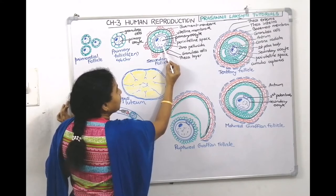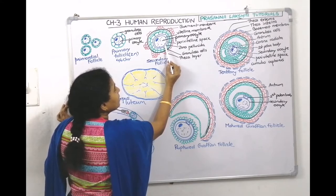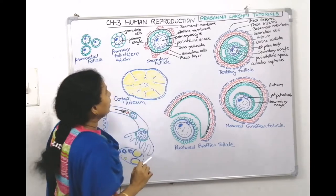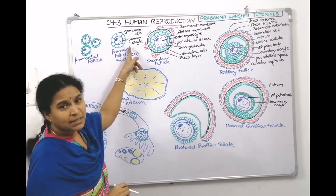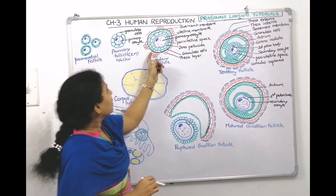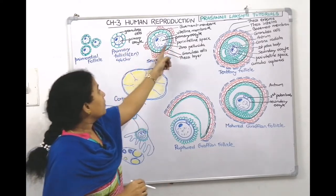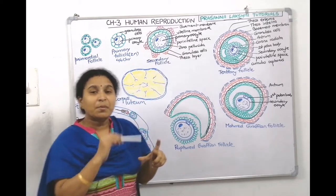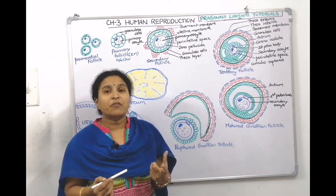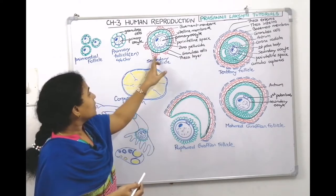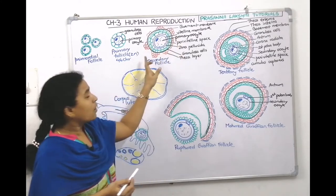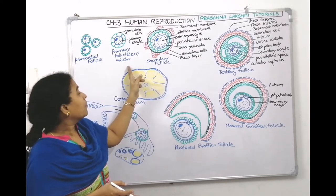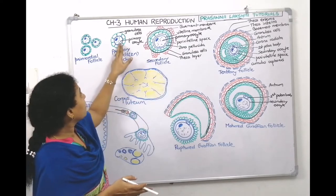The zona pellucida is a mucus coating secreted by the granulosa cells. The granulosa cells become a couple of layers thick, surrounded by a basement membrane, which is further wrapped by a thick layer — shown here as red colored cells (theca cells). When all these changes occur, the primary follicle has transformed into a secondary follicle. Inside, it is still a primary oocyte.